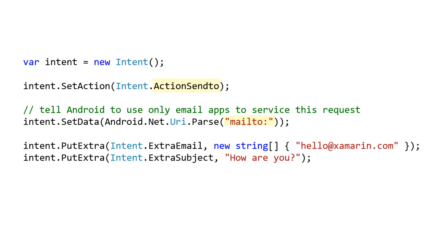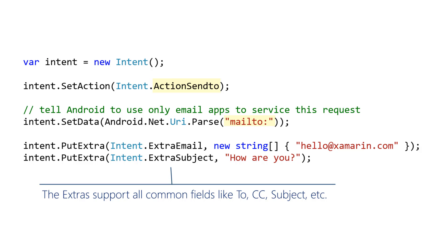There are many options for the extras. The compose activity will use the extras to pre-populate the editor with things like the subject and body text. Extras are optional but can deliver a better user experience by pre-populating some of the email fields. Android uses the combination of ActionSendTo plus MailTo scheme to decide that it should launch an email activity for you.